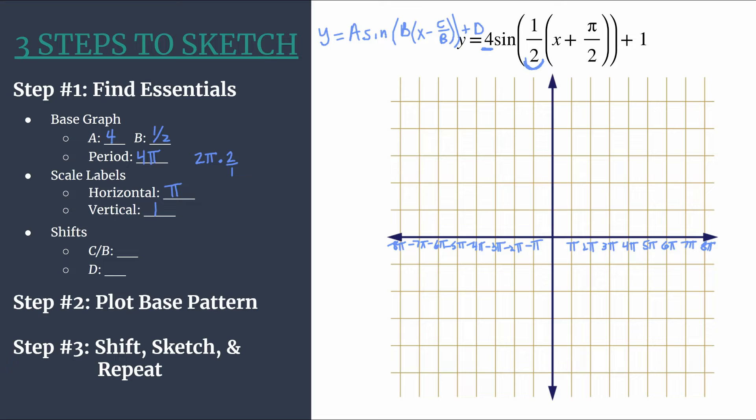So we have that. And let's label our vertical axis, just counting by 1. Got negative 1, negative 2, negative 3, negative 4, and negative 5.